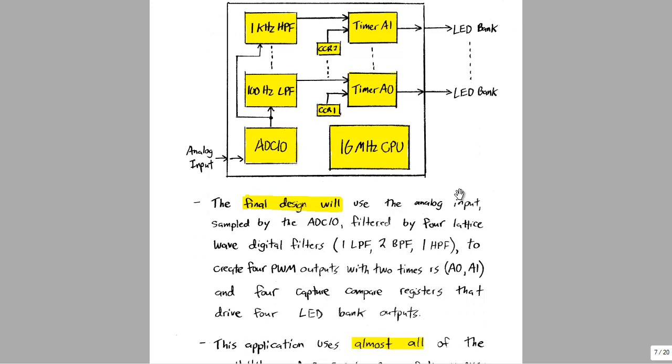Our final design will have four total filters: a low pass filter, then two band pass filters, and one high pass filter. That's a total of four lattice wave digital filters.